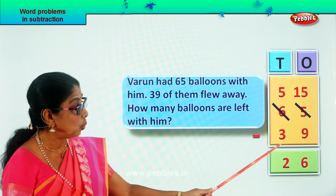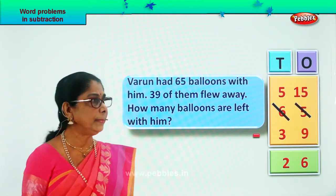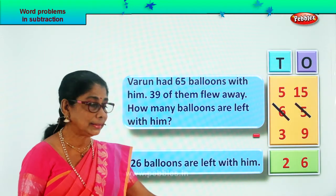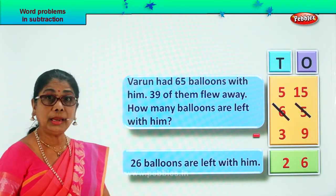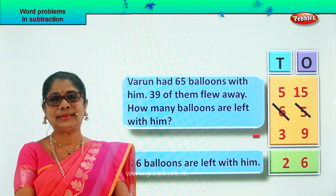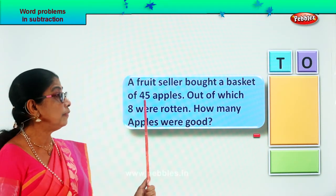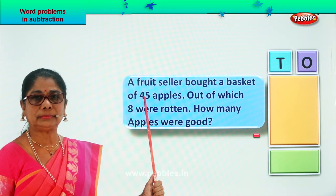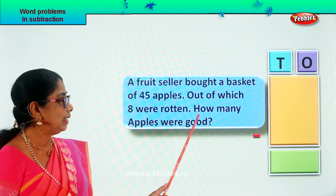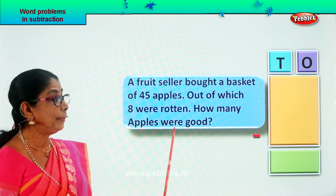65 take away 39 gives you the answer 26. How many balloons are left with him? The answer is 26 — 26 balloons are left with him. Good. Did you enjoy the word problem? Let's look at another problem. Let's read the problem together. A fruit seller bought a basket of 45 apples, out of which 8 were rotten. Your question is to find out how many apples were good.